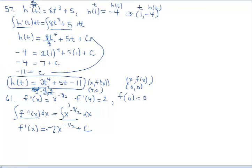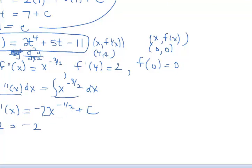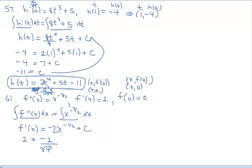This is the general solution. We need to find the constant of integration first — it would not be appropriate to integrate again before finding the c value. So next, replace f prime of x with 2, and x with 4. Now 4 to the negative one-half means square root in the denominator, so that becomes negative 1. We have 2 equals negative 2 times negative 1 plus c, giving us 2 equals 2 plus c, so c equals... and now we know the constant of integration for our derivative. Let's rewrite the derivative.